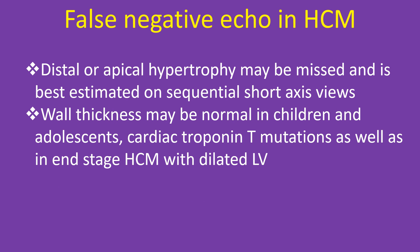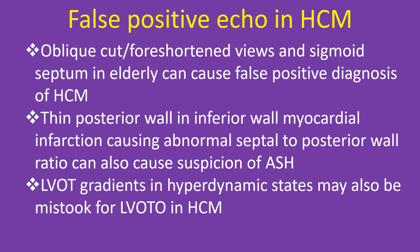False negative echo in HCM: Distal or apical hypertrophy may be missed and is best estimated on sequential short axis views. Wall thickness may be normal in children and adolescents, in cardiac troponin T mutations, and in end-stage HCM with dilated LV. False positive echo in HCM: Oblique cuts or foreshortened views and sigmoid septum in the elderly can cause false positive diagnosis. Thin posterior wall in inferior myocardial infarction causing abnormal septal-to-posterior wall ratio can also raise suspicion of asymmetric septal hypertrophy. LVOT gradients in hyperdynamic states may also be mistaken for LVOT obstruction in HCM.